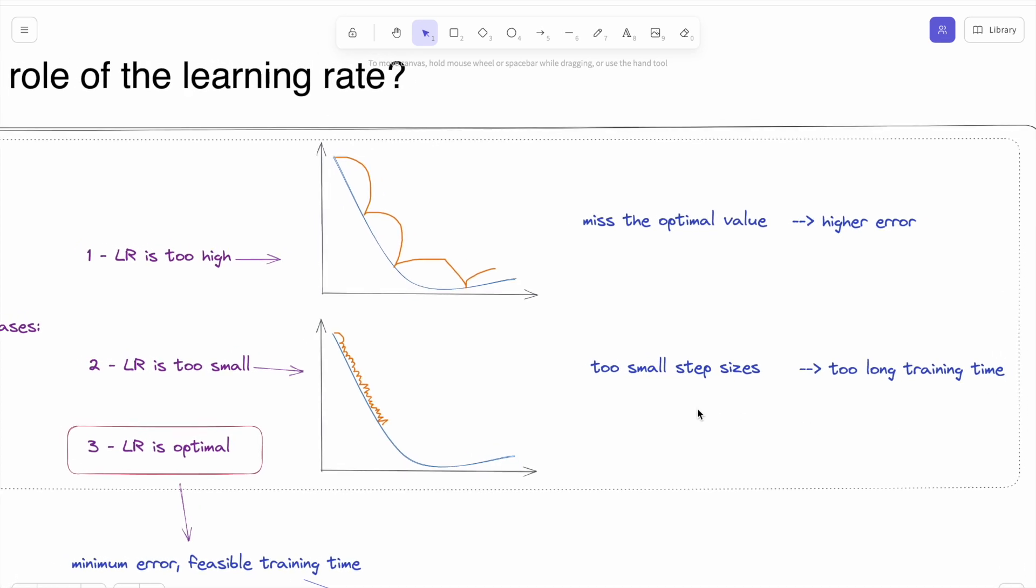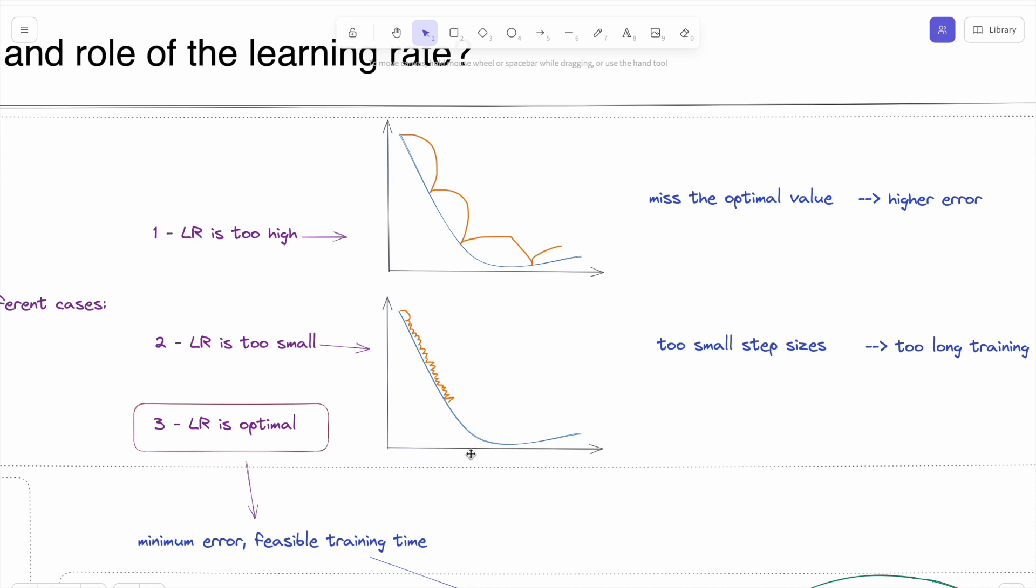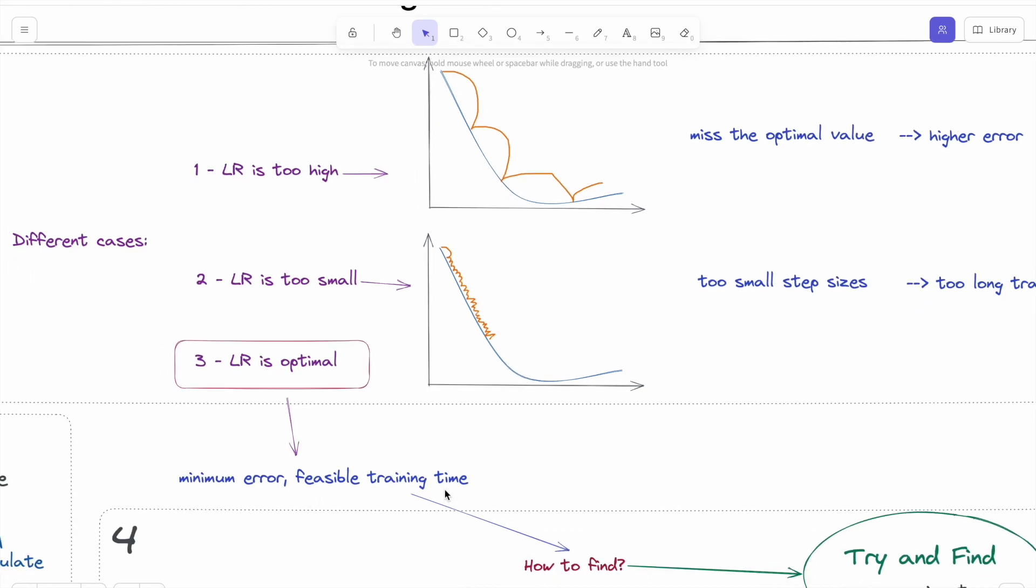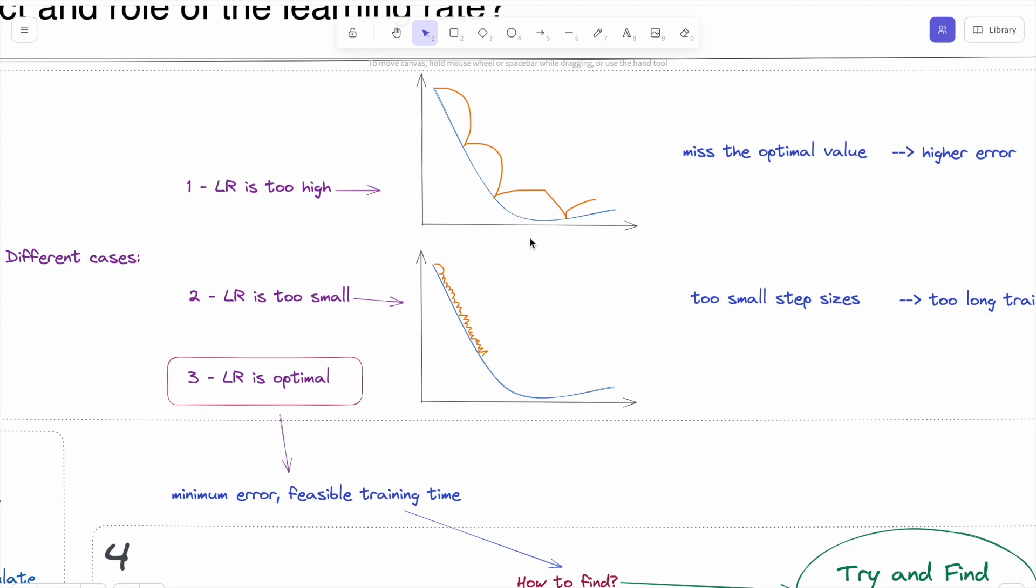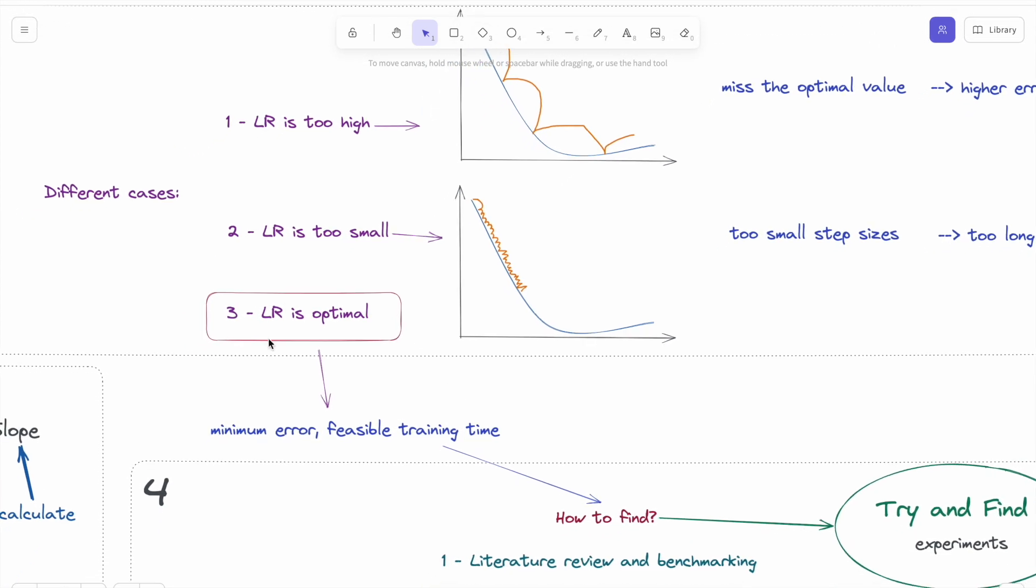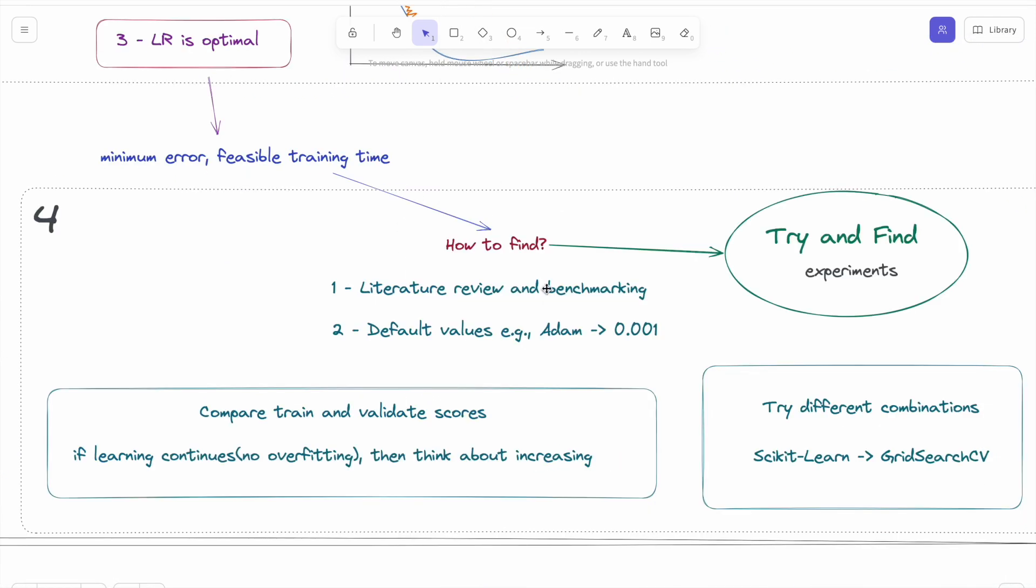We want to find the optimal learning rate to minimize the error in a feasible training time. We don't want to miss the global point, and we don't want too long training time. So we should find the optimal value. But how? Basically, like in most cases in deep learning, you should try and find.